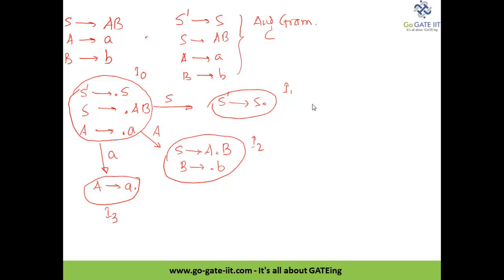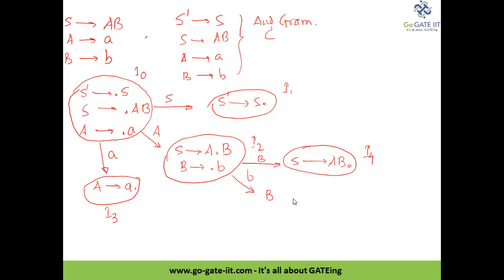From I2, on symbol 'b' we do a shift operation giving S → AB•, which is I4. From I2 on small 'b' we also get B → b•, which is I5. So I3, I4, and I5 are the reduce actions — the dot is at the end. I1 is the reduce action on the start symbol, which is the accept action.